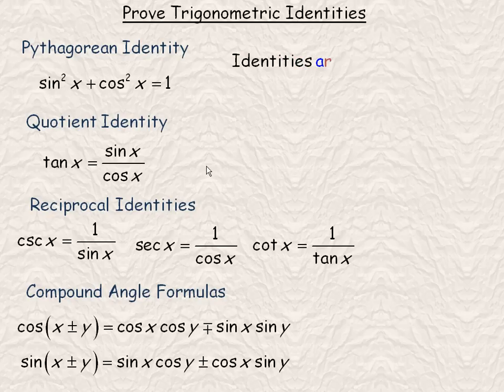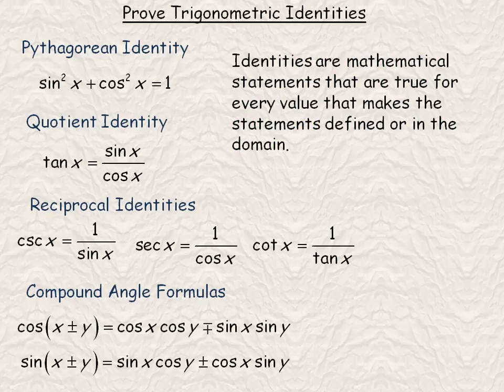And before we get into some examples, this is a definition of what an identity is. It is a mathematical statement that is true for every value that makes the statement defined, or that's in the domain of the statement. As opposed to an equation, an equation usually has a certain finite number of roots.